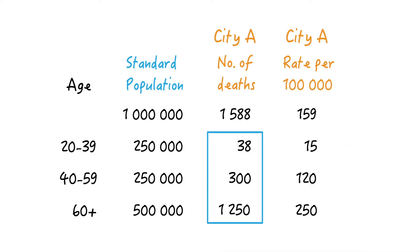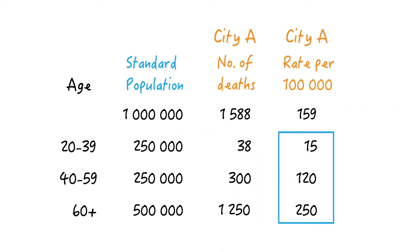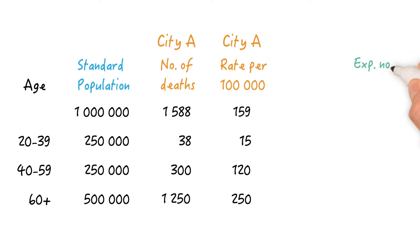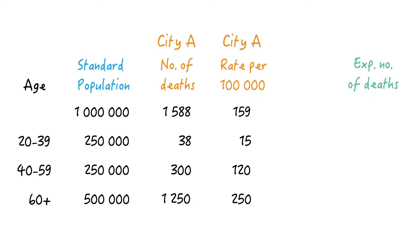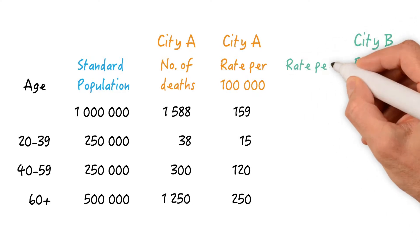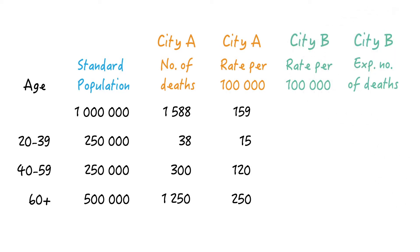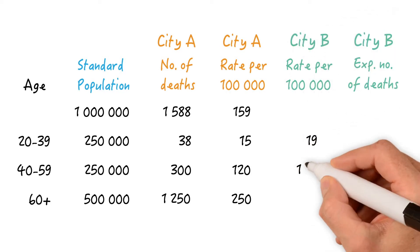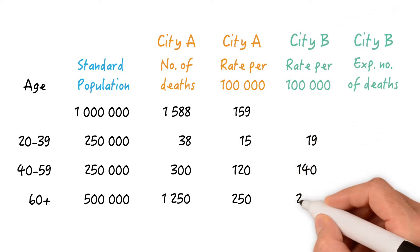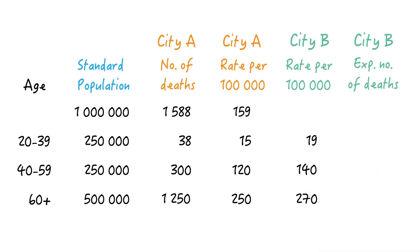This is the age distribution, these are the numbers of deaths, and this was our death rate in city A. How many deaths would we expect if the age distribution was the same in city B as in city A? To answer this question, we need the age-specific death rates of city B and apply them to the age strata of our standard population.